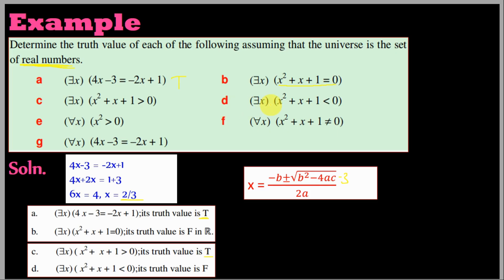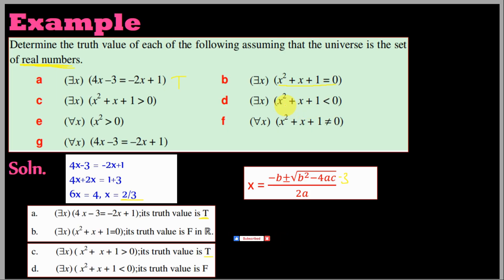There exists some x which satisfies x squared plus x plus 1 less than zero. We check: for any real x, x squared plus x plus 1 is always greater than zero, never less than zero.